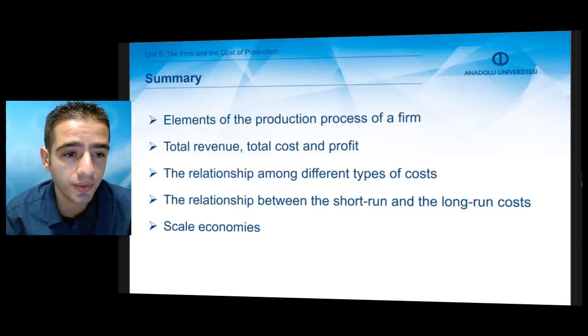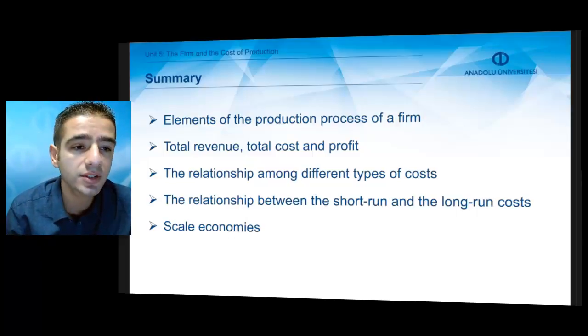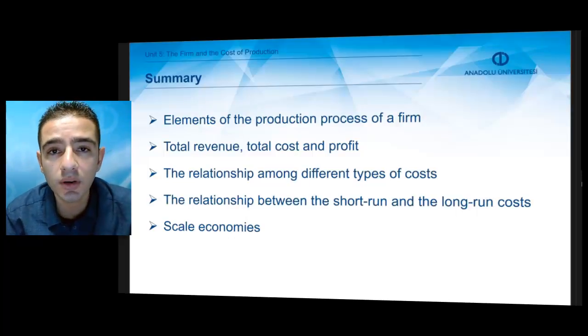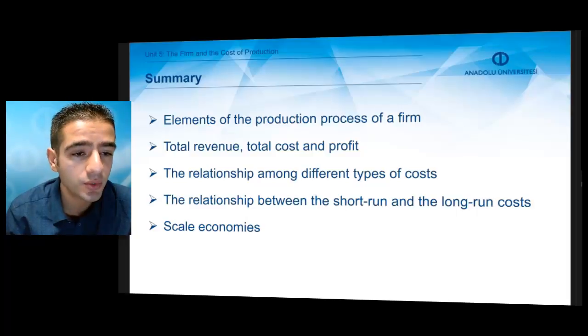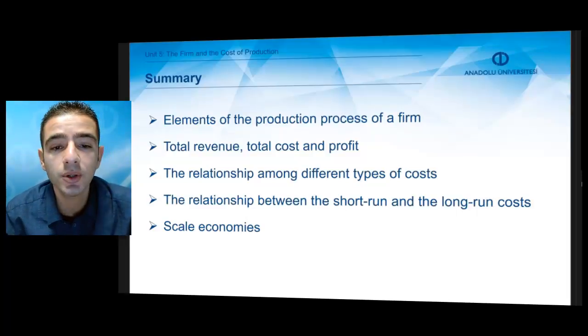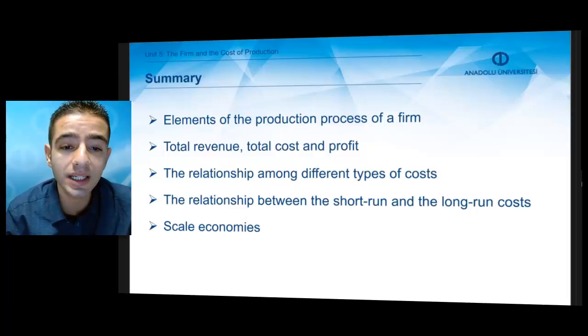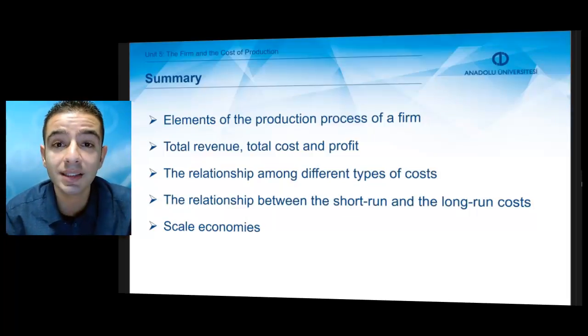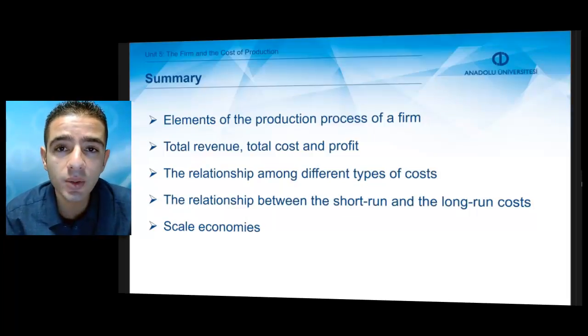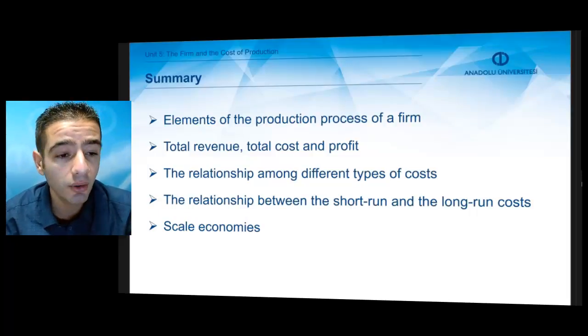In this short summary session, we focused on the elements of the production process of a firm. We also revised the terms total revenue, total cost, and profit, identified the relationship among different types of cost, and touched upon the relationship between short run and long run costs and economies of scale. Of course, this is just a summary, and it will be a good idea to go over all of the unit to have a deeper understanding of firms and the production process.